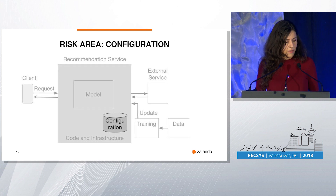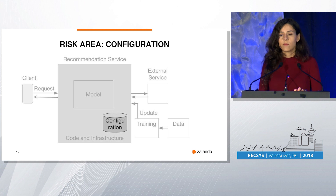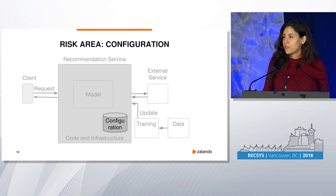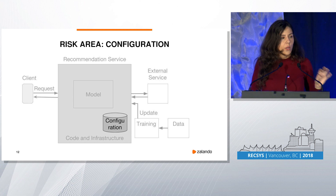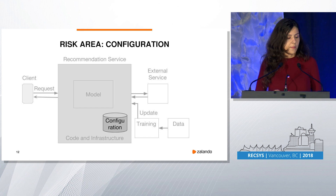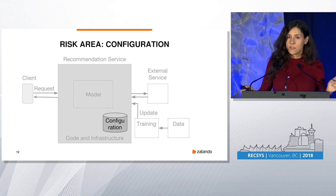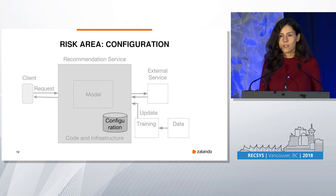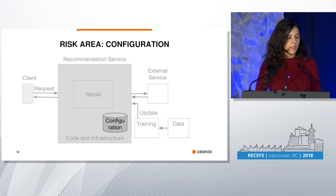Last but not least, configuration is also a risk area that impacts your quality. Someone might apply an overly strict filter, or maybe your configuration worked fine during the non-sales season, but when you move into sales season your data distribution basically changes — and so does the quality of your response. As you can see, there are many things that can go wrong, and since it's software development they will go wrong, and current monitoring is not covering that. So what can we do about it?